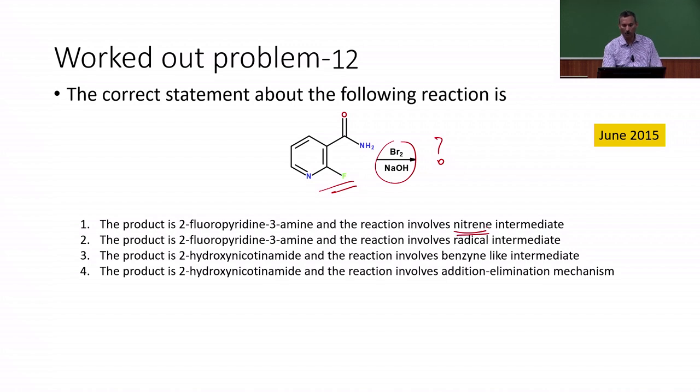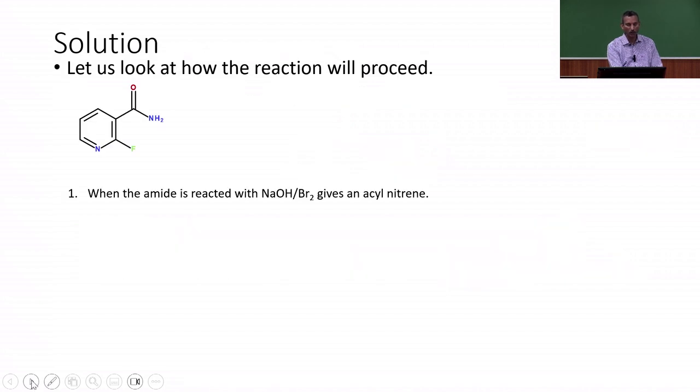Nitrene intermediate is one. In the other case, we have a radical intermediate. In the third one, we have a benzyne-like intermediate. The fourth one is like an addition elimination mechanism. We have four different types of mechanism by which the reaction actually proceeds, and the first two give the same product. The last two give a different type of product. Let us see what is the intermediate and what is the product that is formed.